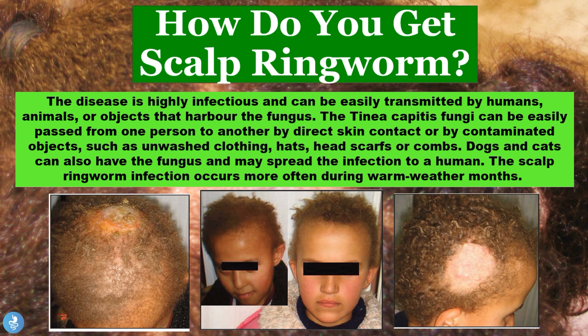The scalp ringworm infection occurs more often during the warm weather months. As an example, here we see a case of two sisters sharing a head comb — one sister's head showed the tinea capitis infection, and the other sister's head was similarly affected. In cats and dogs, the manifestation is also very similar, with the appearance of circular hairless spots on the coat or fur.